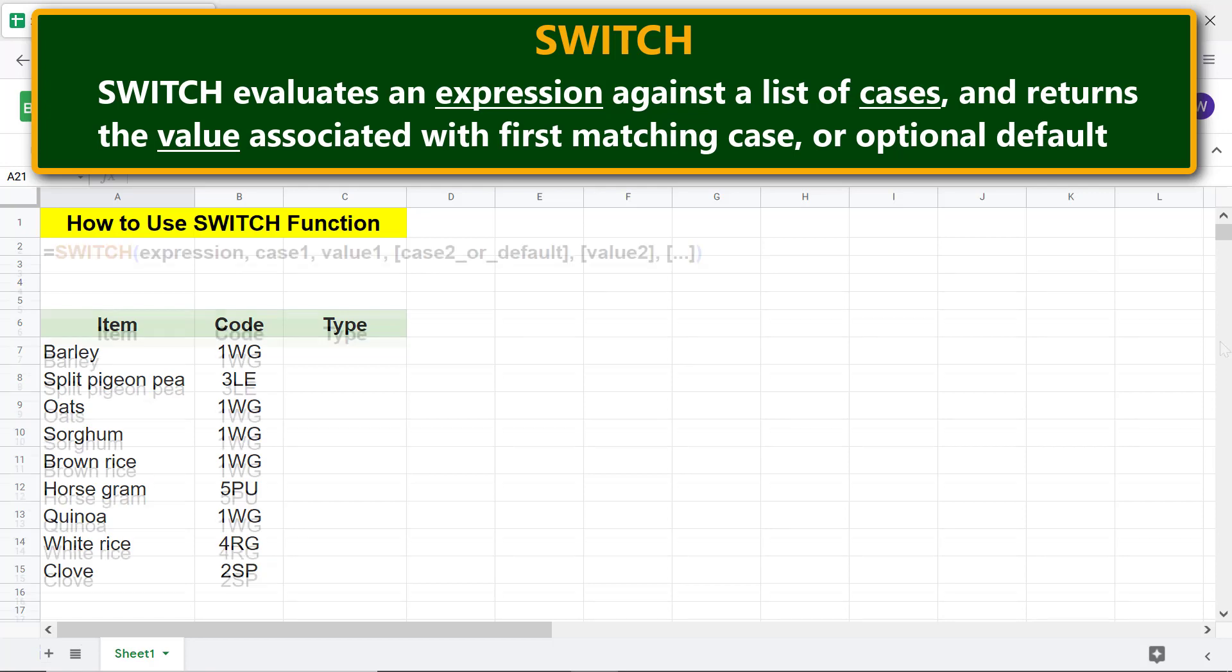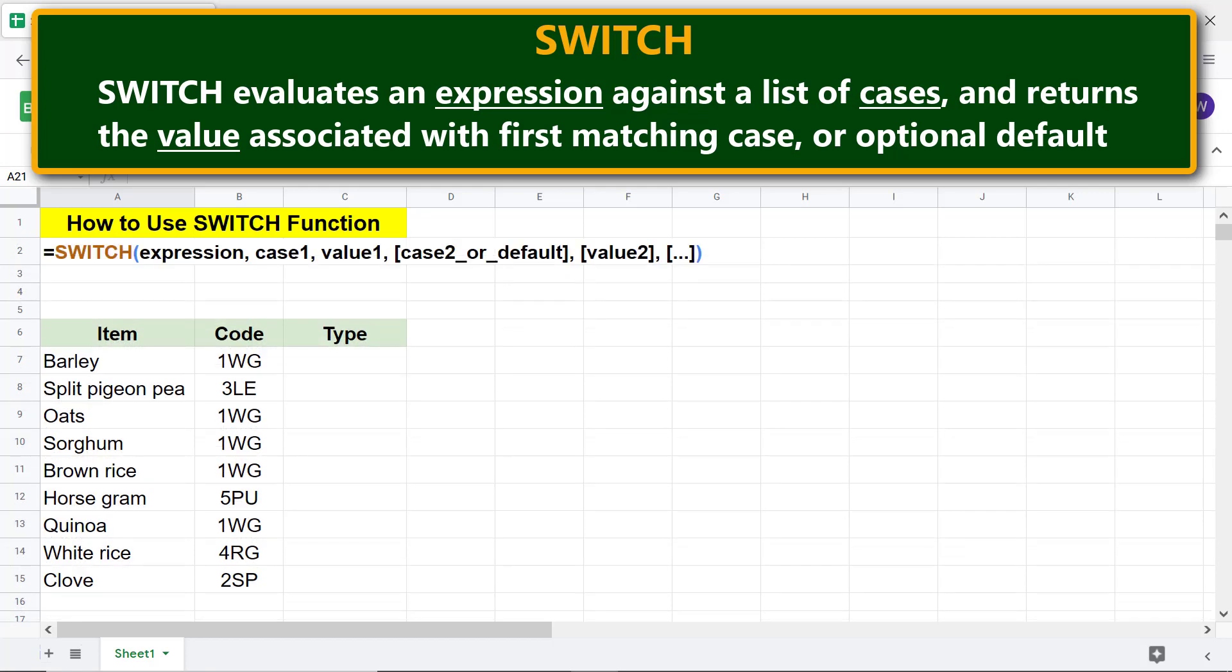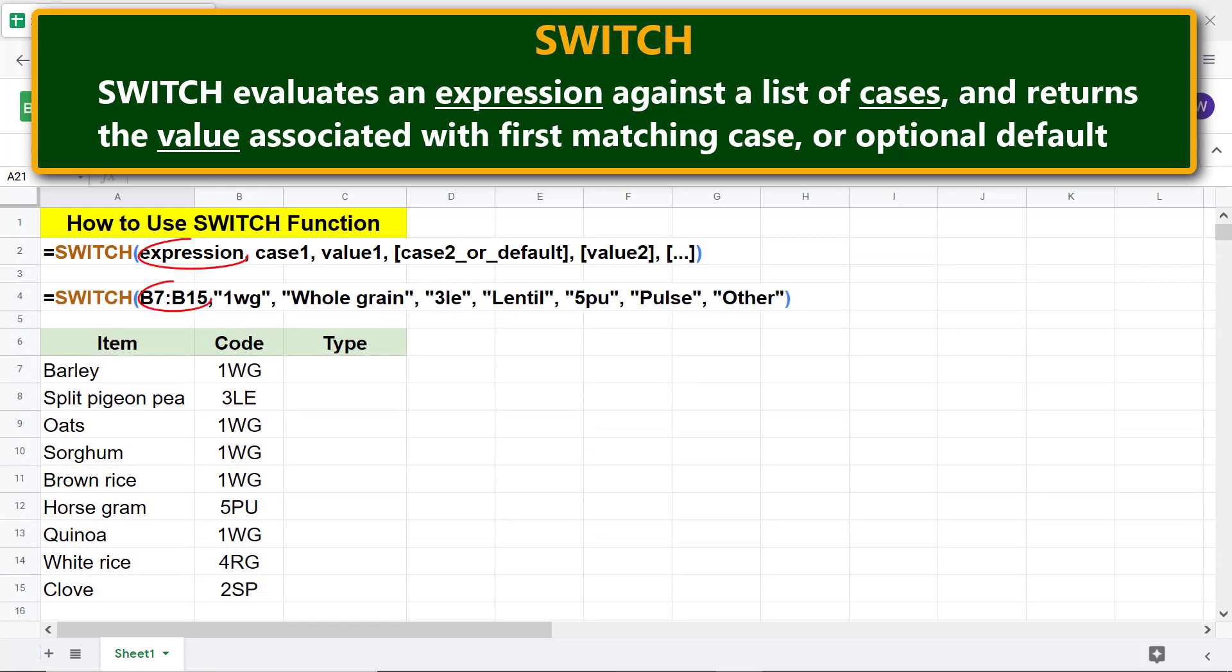Let's look at an example. Expression can be a range, cell reference, formula, or hard-coded value. Case 1 is the first text or number which is matched against an expression. Value 1 is the first value to be returned if case 1 is found in the expression.